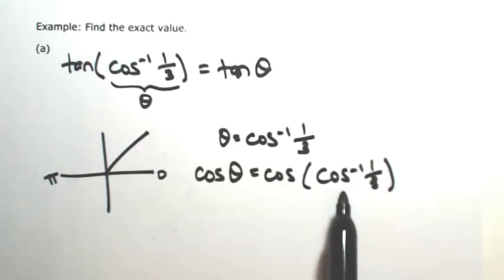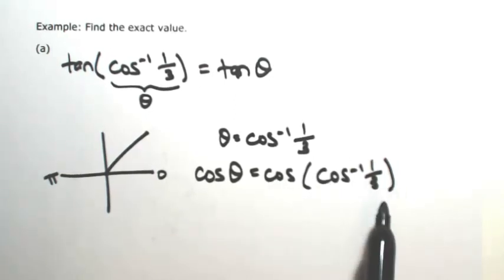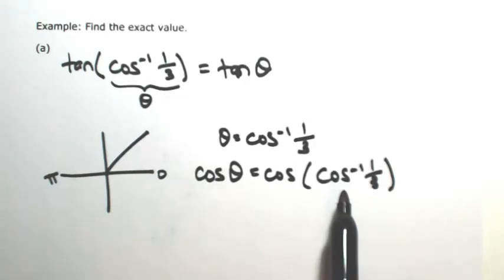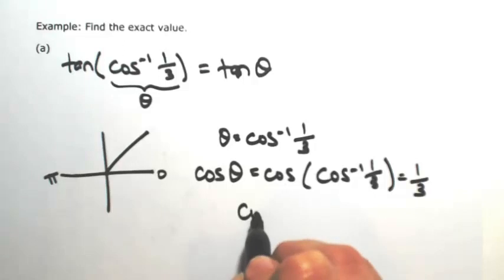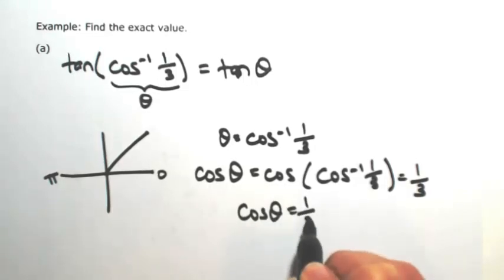So then cosine composed with the inverse would undo each other as long as that 1 third is in the domain of inverse cosine. The domain is between negative 1 and 1, so this is in fact 1 third. So this means that the cosine of the angle is 1 third.